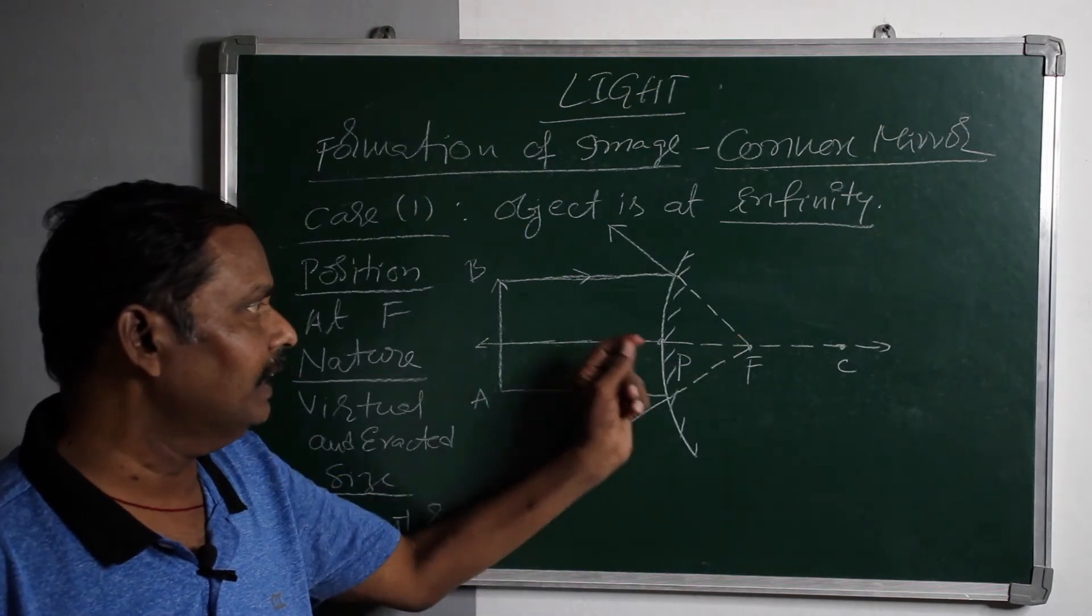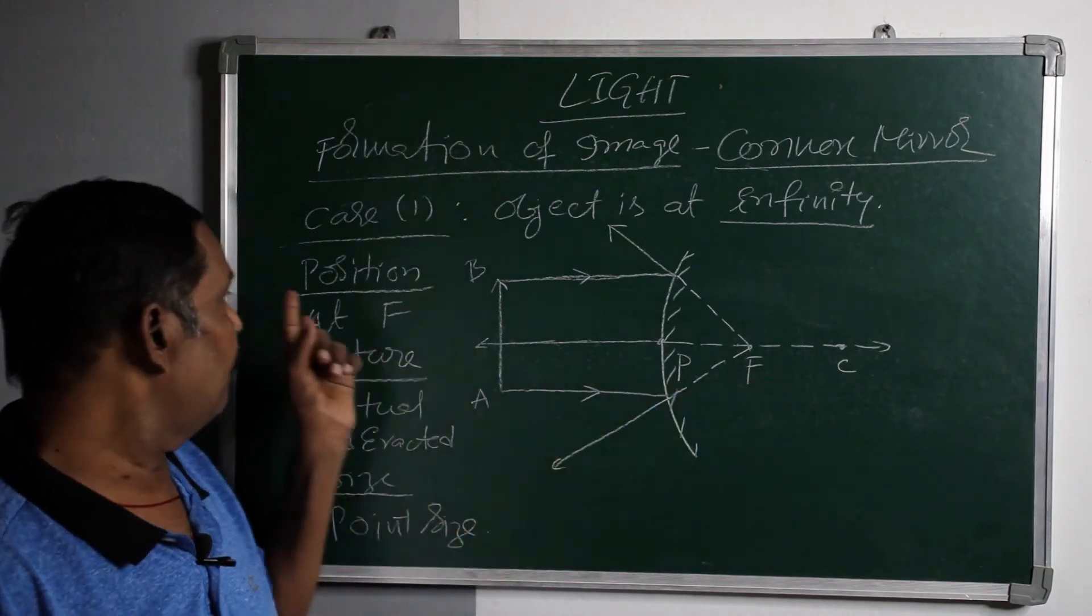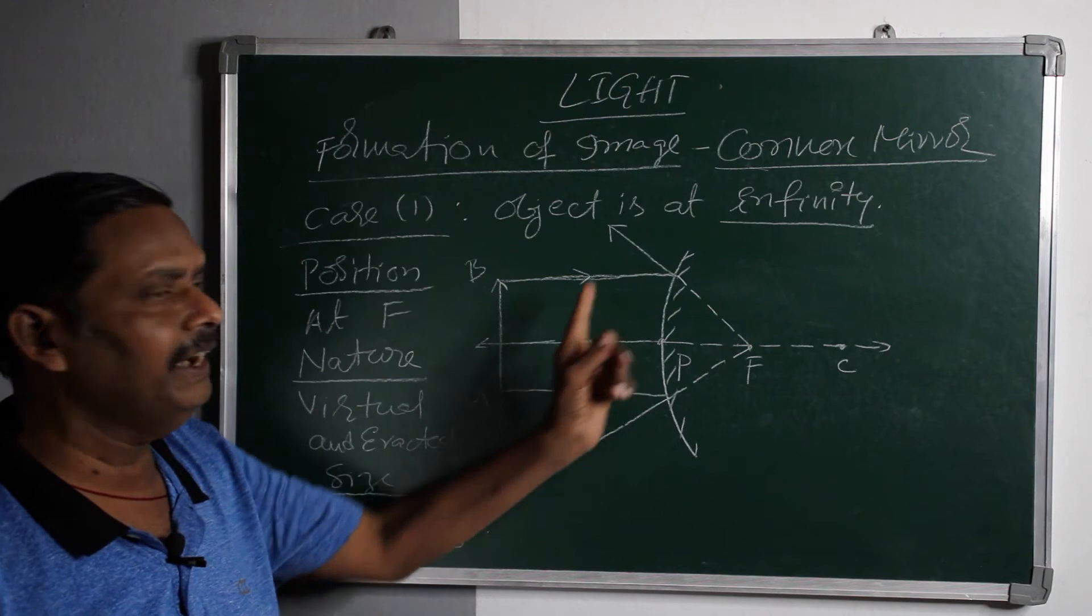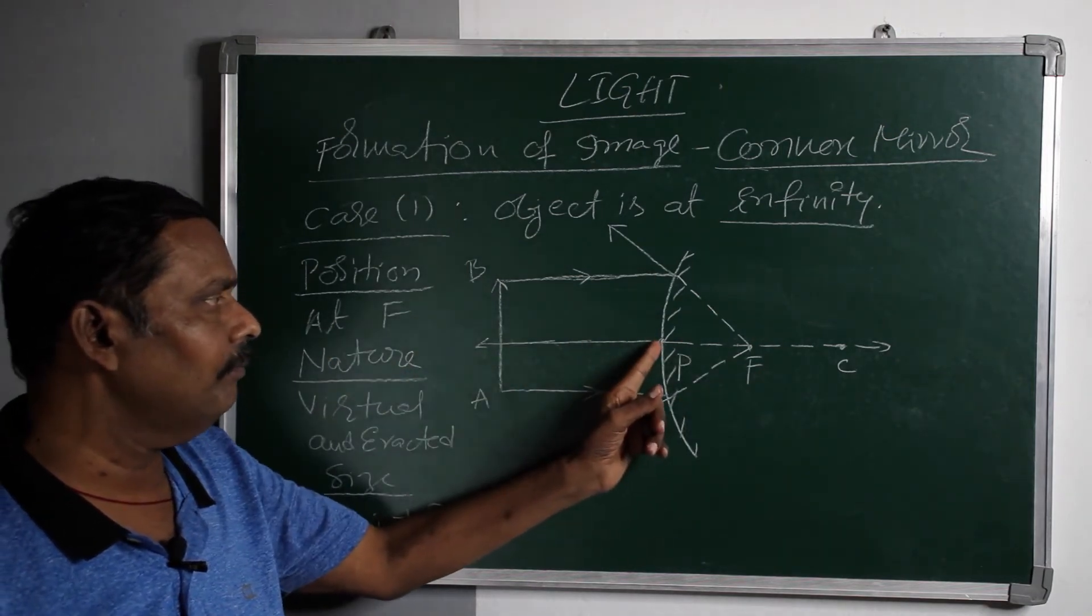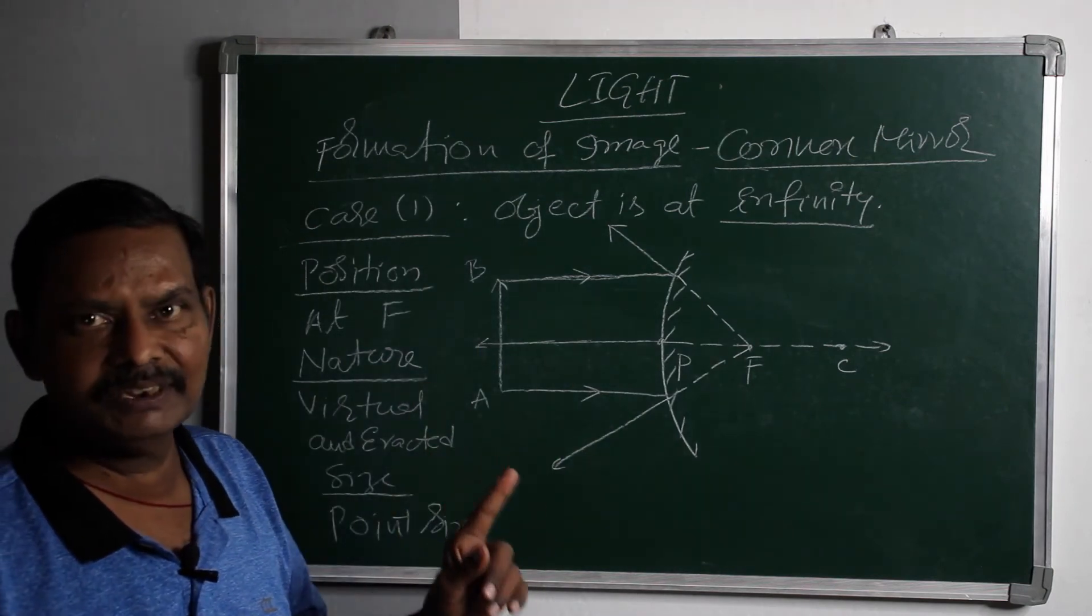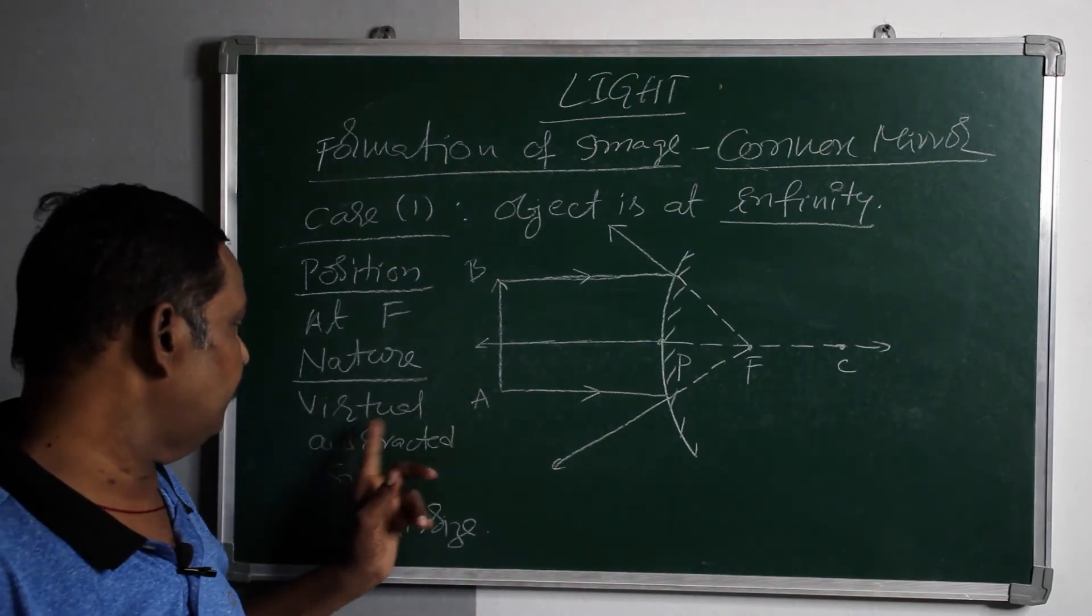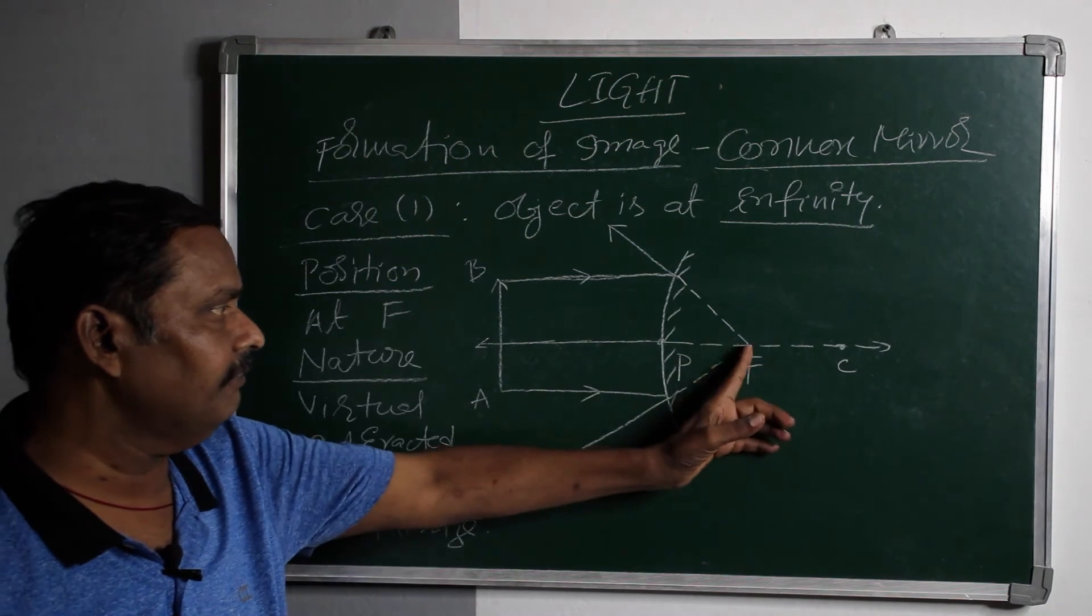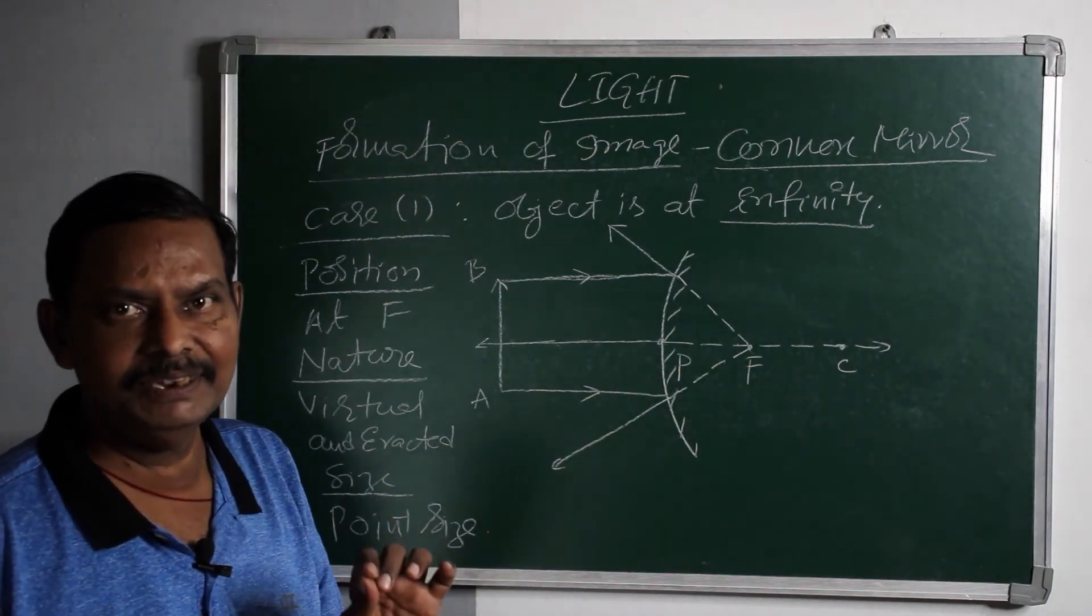So you will get the image behind the mirror. So position of the image is at f, but f is behind the mirror. And nature, whatever the image formed behind the mirror is virtual, and virtual images are erected. So the nature of the image is virtual and erected. And last, size. At f a point size image will form. So size of the image is point size.